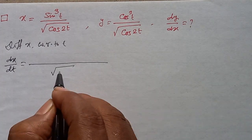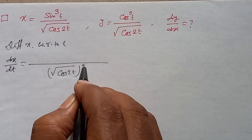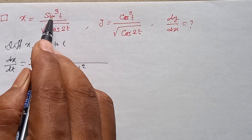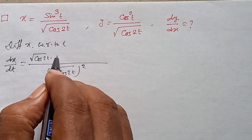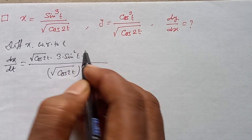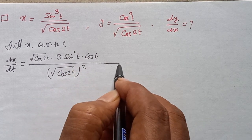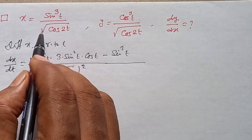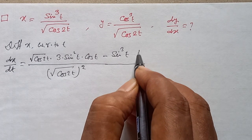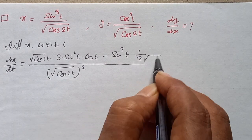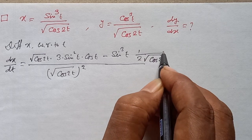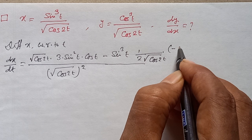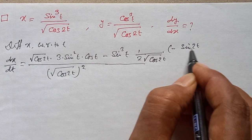dx/dt equals: root over cos 2t into d/dt of sine cube t, which gives 3 sine square t into cos t, minus sine cube t into d/dt of root over cos 2t, which gives 1 by 2 root over cos 2t into minus sin 2t times 2 (derivative of 2t).